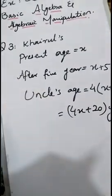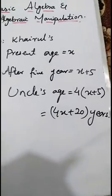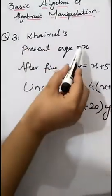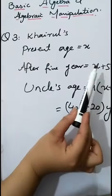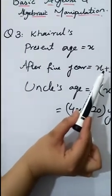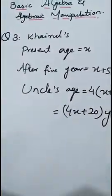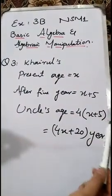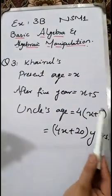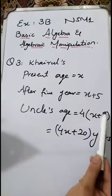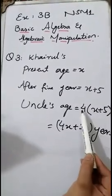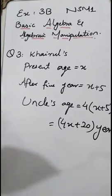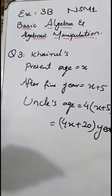In the statement, first of all understand that Harold's present age is x, and after 5 years his age will be x plus 5. As the uncle's age is 4 times that of Harold's age after 5 years, we multiply Harold's age by 4 to get the uncle's age. Now we move towards word problem question 4.